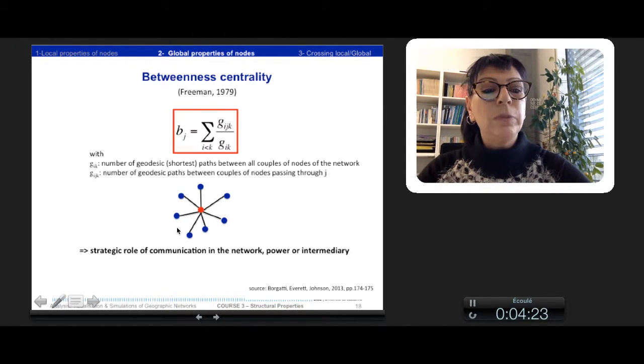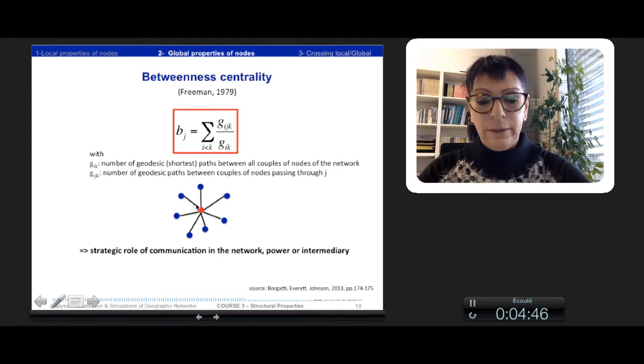Divided by all the shortest paths of the network. So a node betweenness centrality is equal to 0 when it is never along the shortest paths between any two others. This is the case for the blue nodes here. And a node betweenness is maximal when it lies along every shortest path between any two other nodes of the graph, which is the case of the star here.